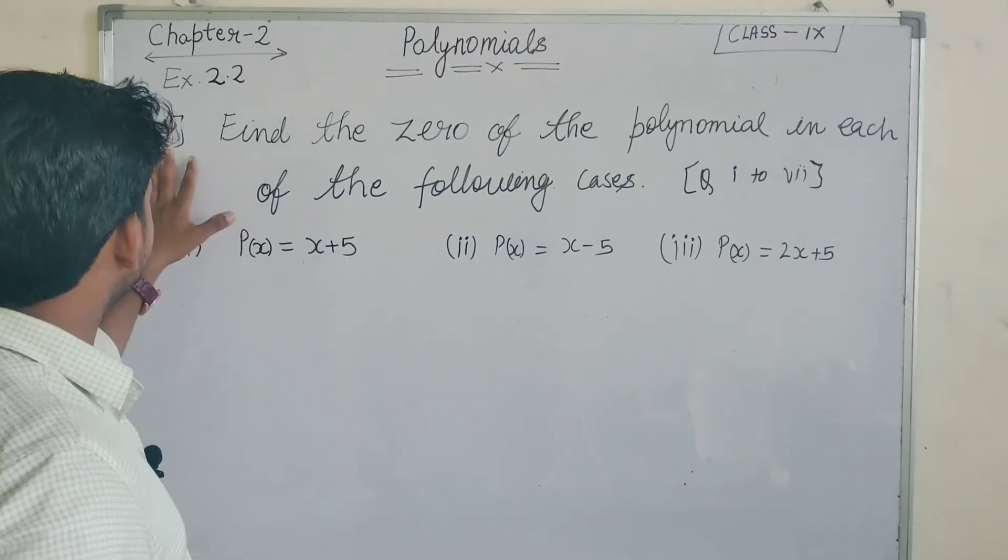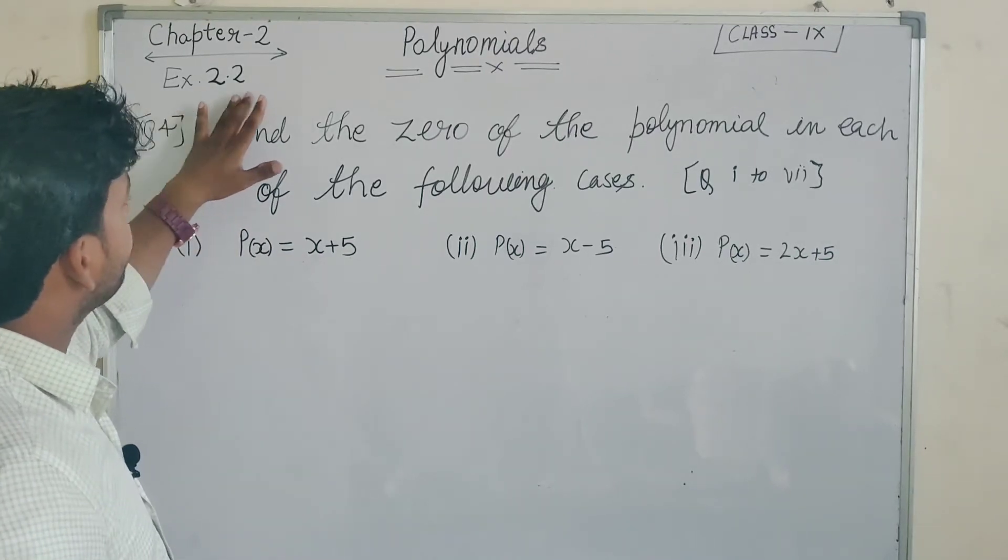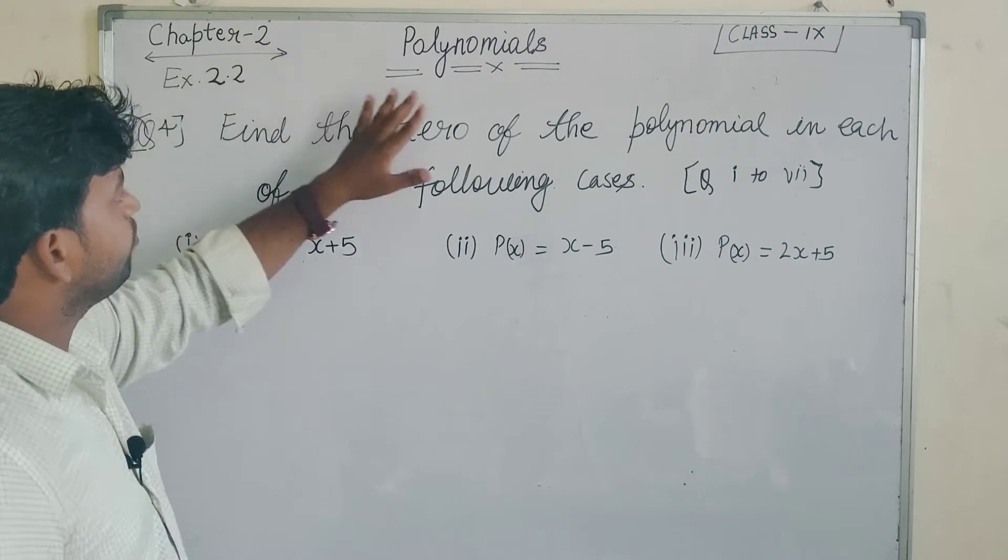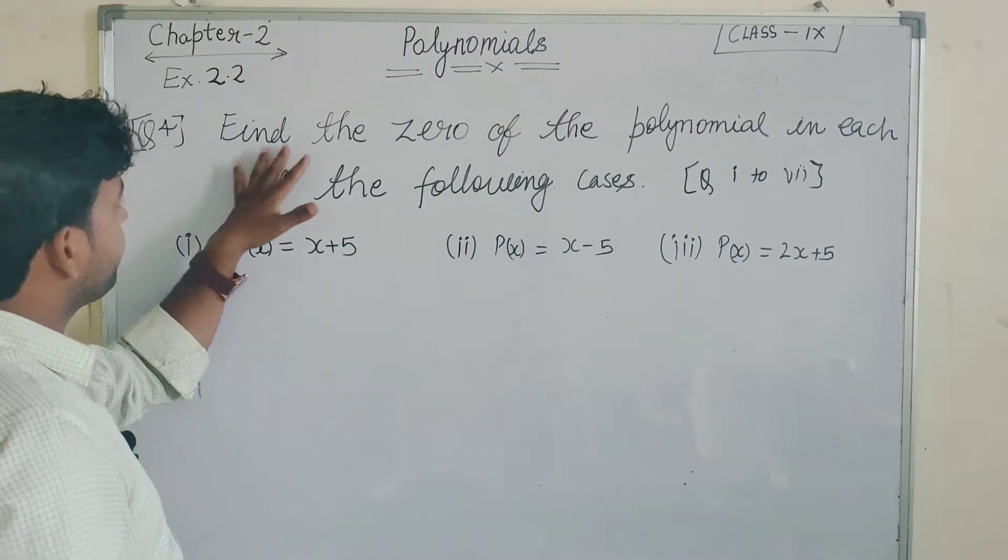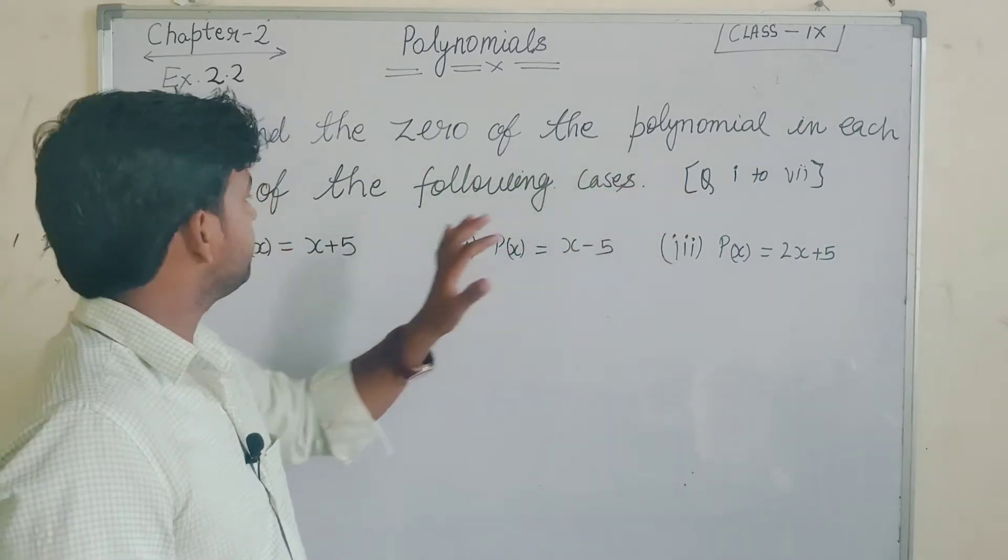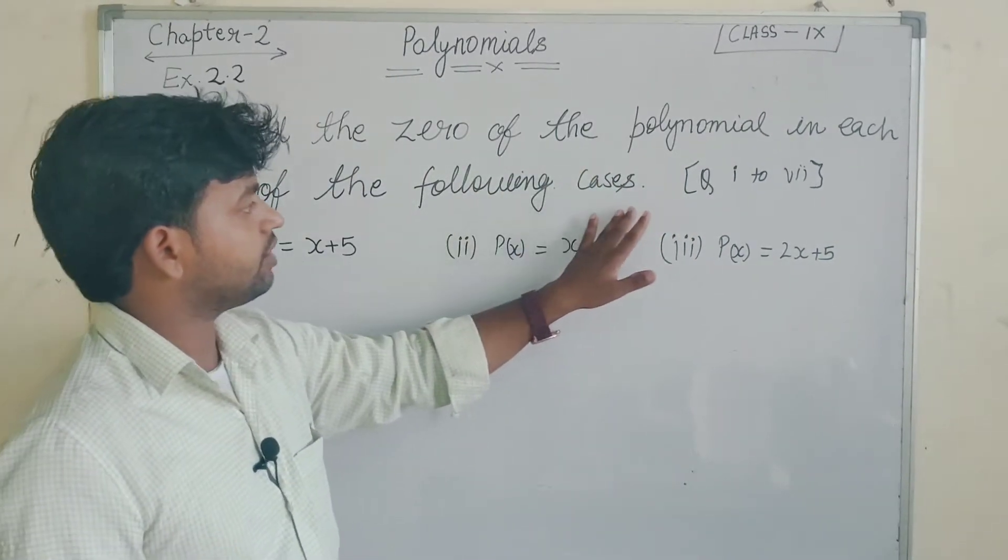Today we are going to discuss question number 4 from exercise 2.2 of chapter 2 polynomials class 9. The question is: Find the zero of the polynomial in each of the following cases.